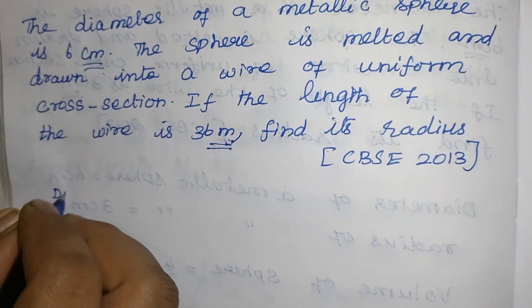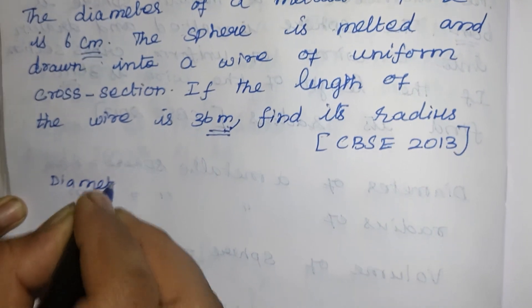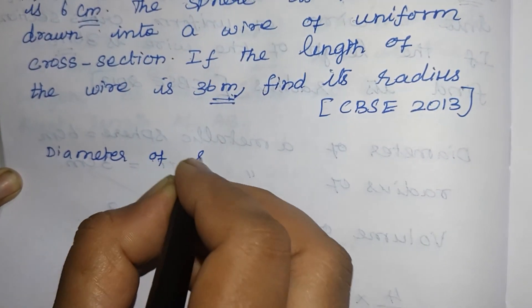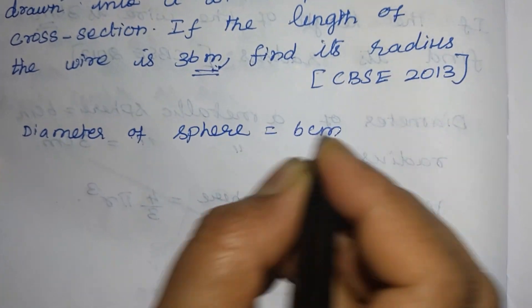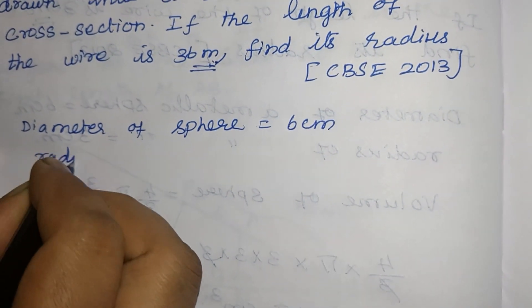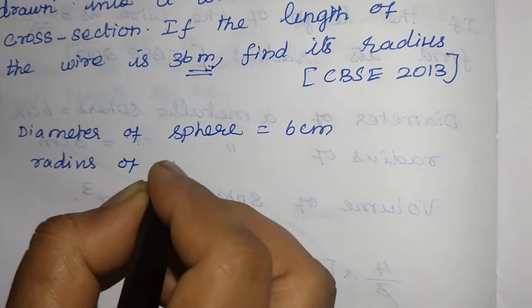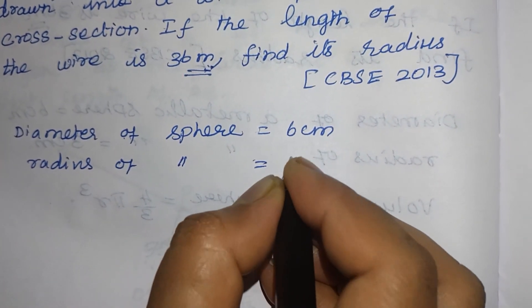Diameter of a metallic sphere. Diameter of a sphere equal to 6 cm. Radius of sphere equal to 6 by 2, 3 cm.